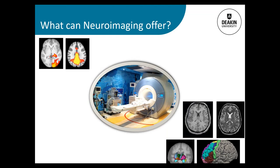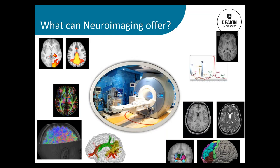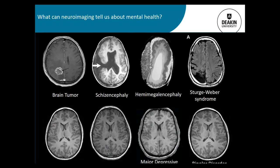We can also look at function — giving individuals a task to do in the scanner and seeing what parts of their brain they use. More recently, resting-state imaging looks at fluctuations of blood flow to see what parts of the brain are functionally connected even without a task. We can also use how water diffuses to infer structure about the white matter — the telephone cables connecting parts of the brain — and look at whole-brain tracks or particular anatomical tracks of interest, as well as the neurochemical composition of different regions.